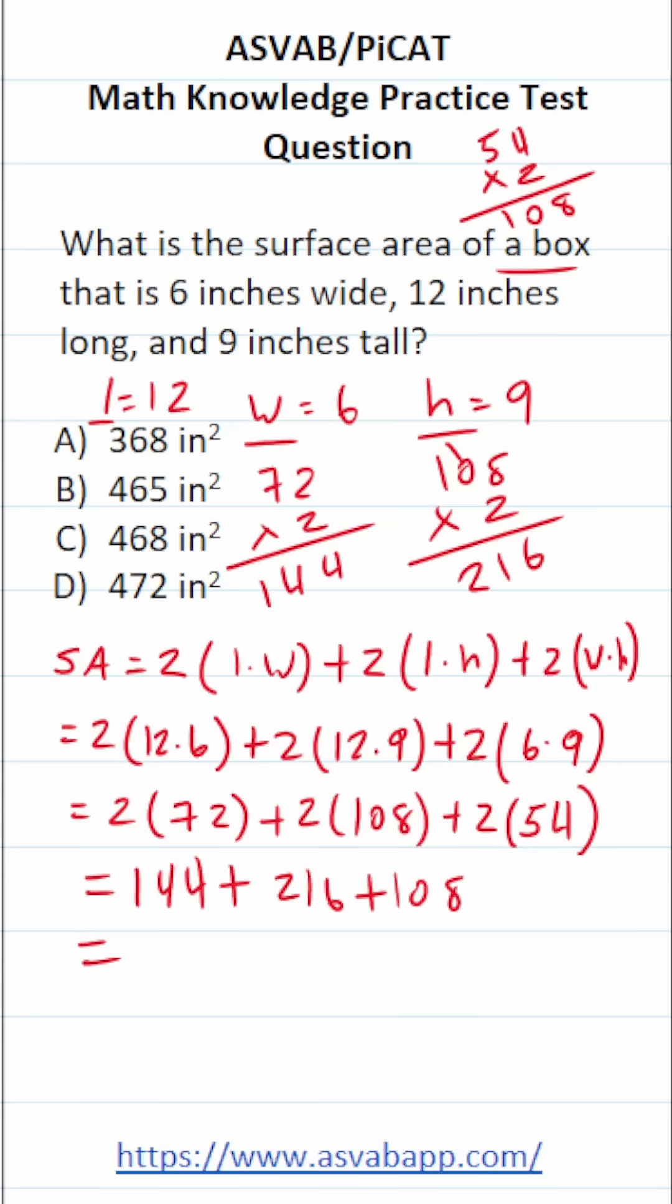Now, let's go ahead and add these three things together. Now, I would definitely do this part off to the side. Again, we have 216, 144, and 108. 6 and 4 is 10, plus 8 is 18. So drop down an 8, carry a 1. 4, 5, 6. And then 2, 3, 4. So the surface area of this box is going to be 468 square inches, which is answer choice C.